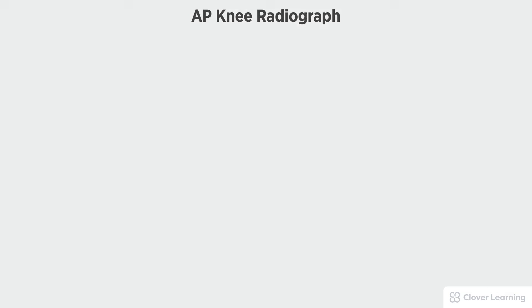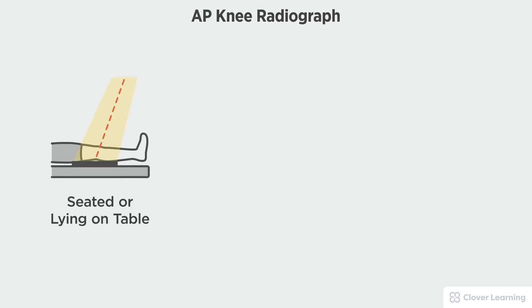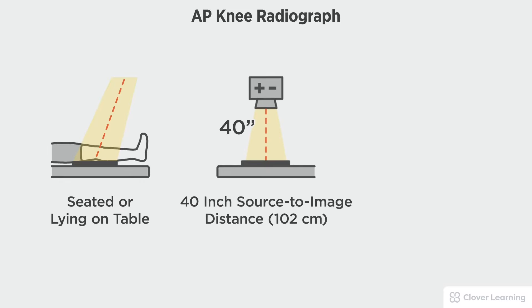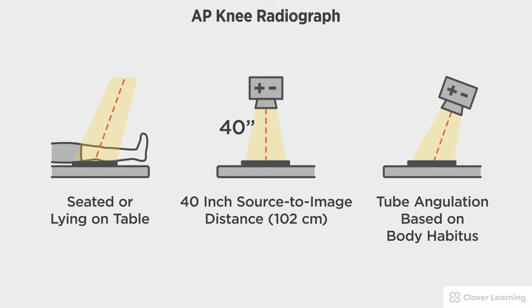In this view we will be demonstrating the AP knee. The AP knee radiograph should be performed with the patient seated or lying on the radiographic table, with the image receptor placed tabletop or in the bucky.